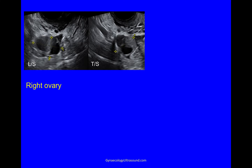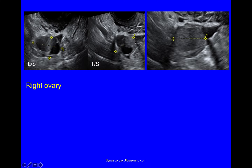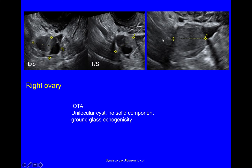Then we go to look at the right ovary, both in the longitudinal plane and in the transverse plane, and you can see here that there's a little cyst. Using the IOTA criteria, this is a unilocular cyst with no solid component and ground-glass echogenicity, and this is a small ovarian endometrioma.